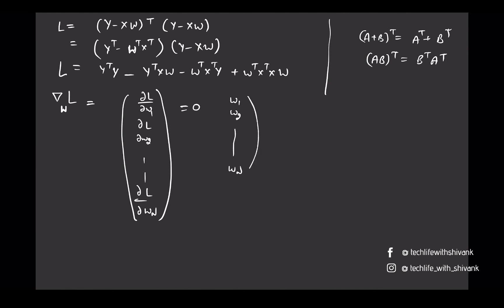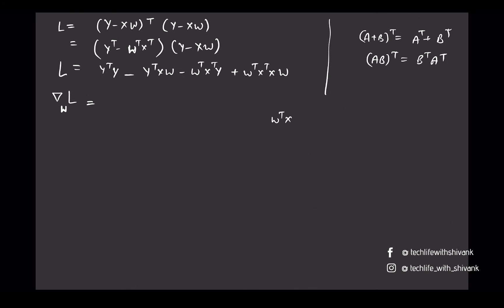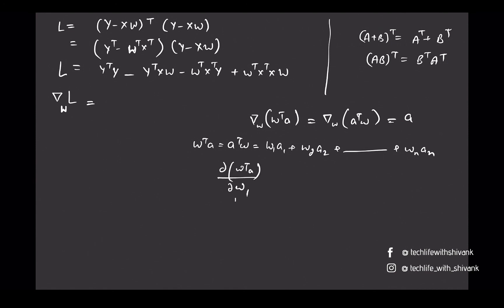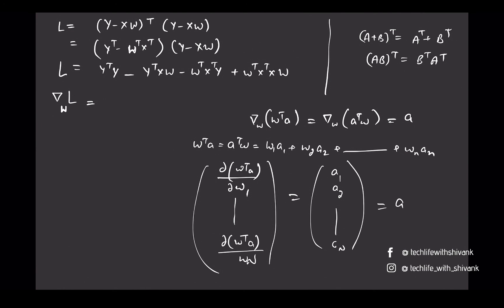We set the gradient equal to zero to get the values w1 to wN. To calculate the derivative we first need the formula for the derivative of wᵀa (or equivalently aᵀw) with respect to w. Let's call the vector a. Then wᵀa equals w1*a1 + w2*a2 + ... + wN*aN. Taking the partial derivative with respect to each component w1, w2, ..., wN and forming the resulting vector, we see that the derivative with respect to w1 is simply a1 — hence the gradient is just the vector a.